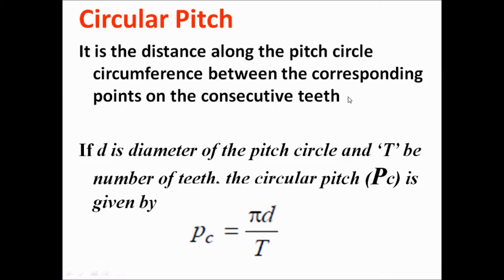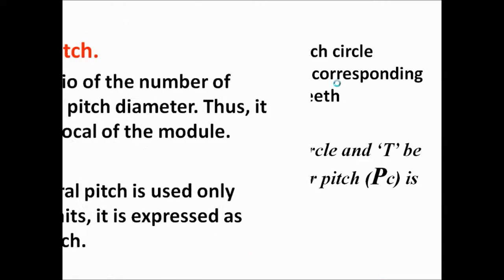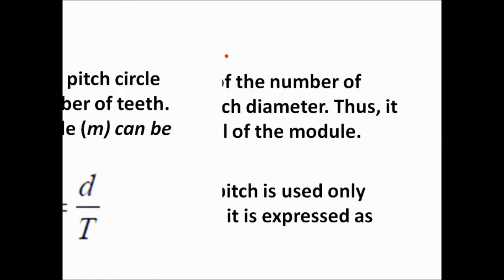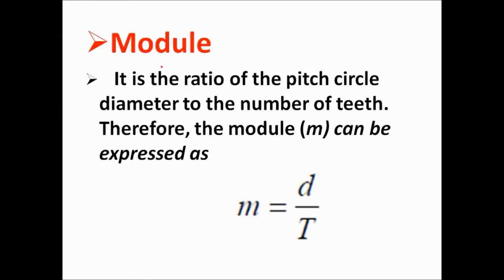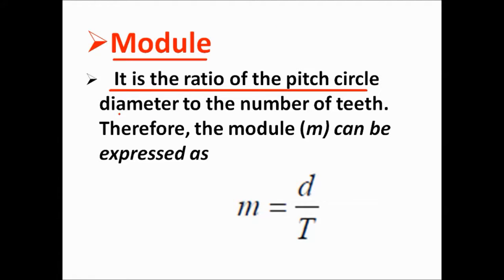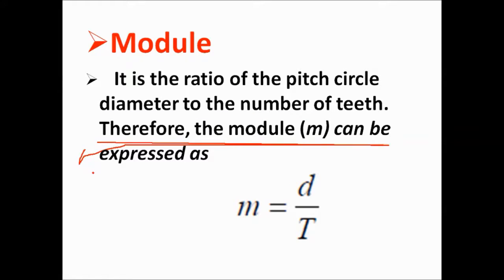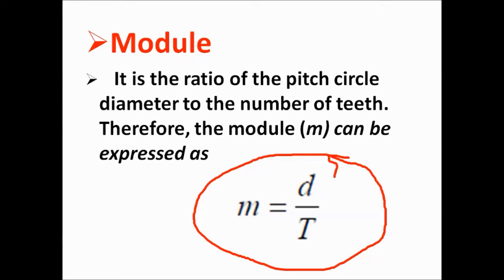Then we move to another important term: module. Module is the ratio of pitch circle diameter to the number of teeth, given by m = D/T. Then, addendum circle — as you can watch in the image of the gear tooth profile, the addendum circle is the circle passing through the tips of the gear teeth.